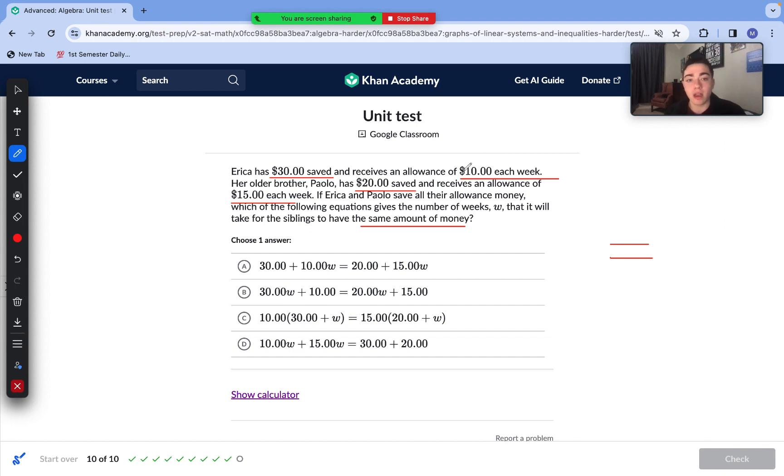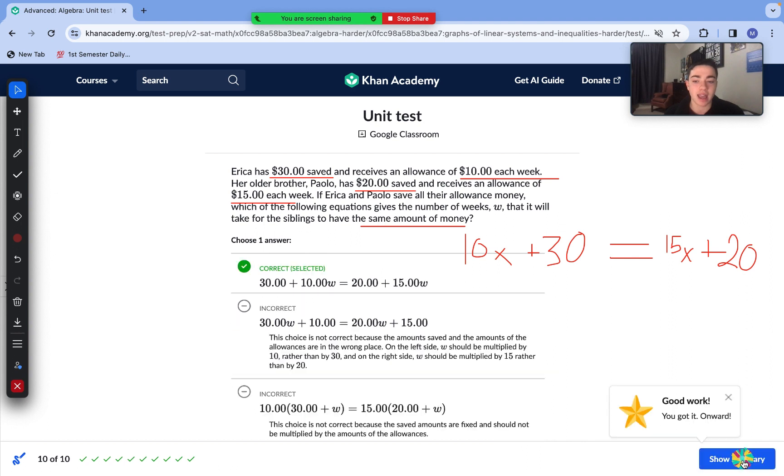With Erica's equation, we can see $10 each week is going to be repeating. So 10 is our slope, 10 is with that x, plus 30 because we had $30 saved at the start. That's the y-intercept. So that's what our left side looks like. Then Paolo had $20 saved at the very start, initial amount, and then receives an allowance of $15 per week, or 15x. It's just as simple as this. The only answer choice that matches our equation is answer choice A. So answer choice A is correct.